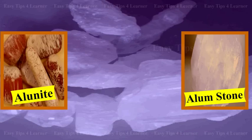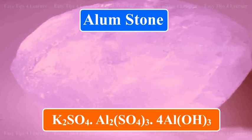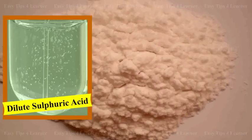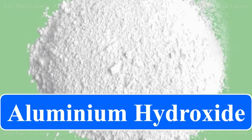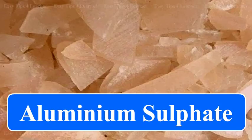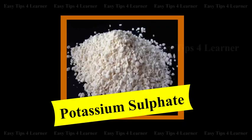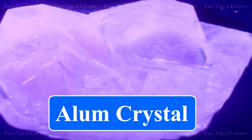Potash alum is manufactured from alunite or alum stone. Alunite or alum stone is K2SO4·Al2(SO4)3·4Al(OH)3. It is finely powdered and boiled with dilute sulfuric acid. The aluminum hydroxide part changes into aluminum sulfate. When a little more potassium sulfate in calculated amount is added, the alum is crystallized.